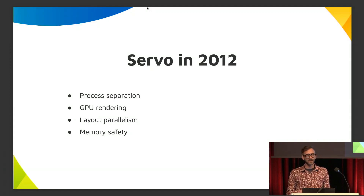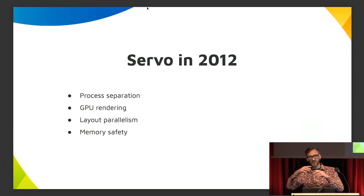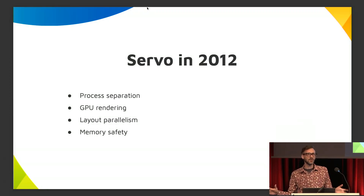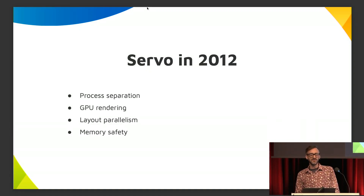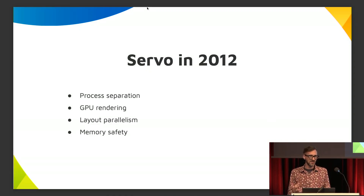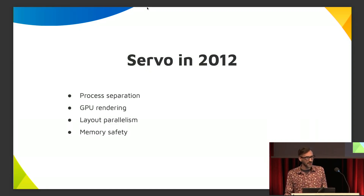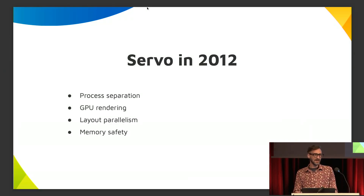In addition, Servo did something where as it walked down the DOM to lay out the page, it would start spreading that work over the CPU cores, basically allowing the browser to take full advantage of massively multi-core CPUs even on a single page. And because Servo was written in Rust, it had a much greater amount of memory safety than other browser engines, which are largely written in C++.